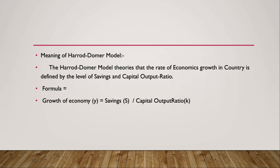The Harrod-Domar model theorizes that the rate of economic growth in a country is defined by the level of savings and the capital output ratio. These two factors — the level of savings and the capital output ratio — together determine the rate of economic growth in a country.